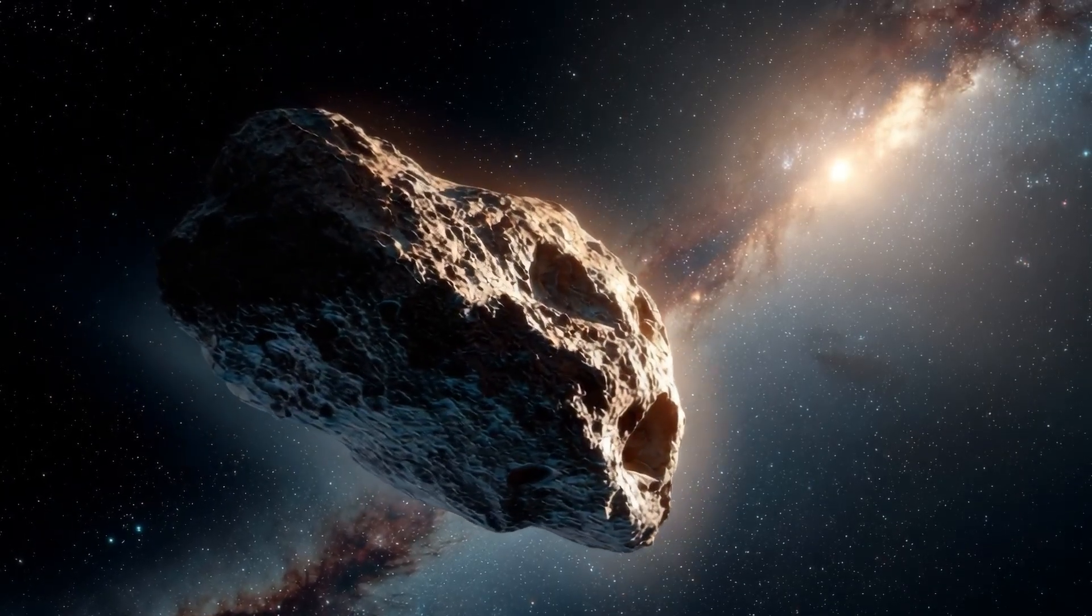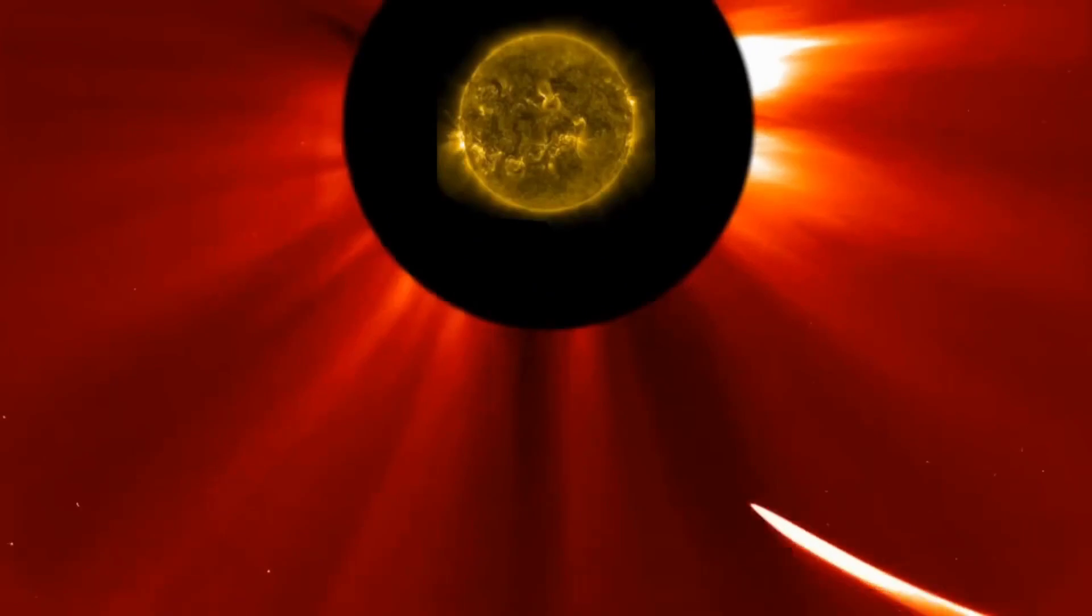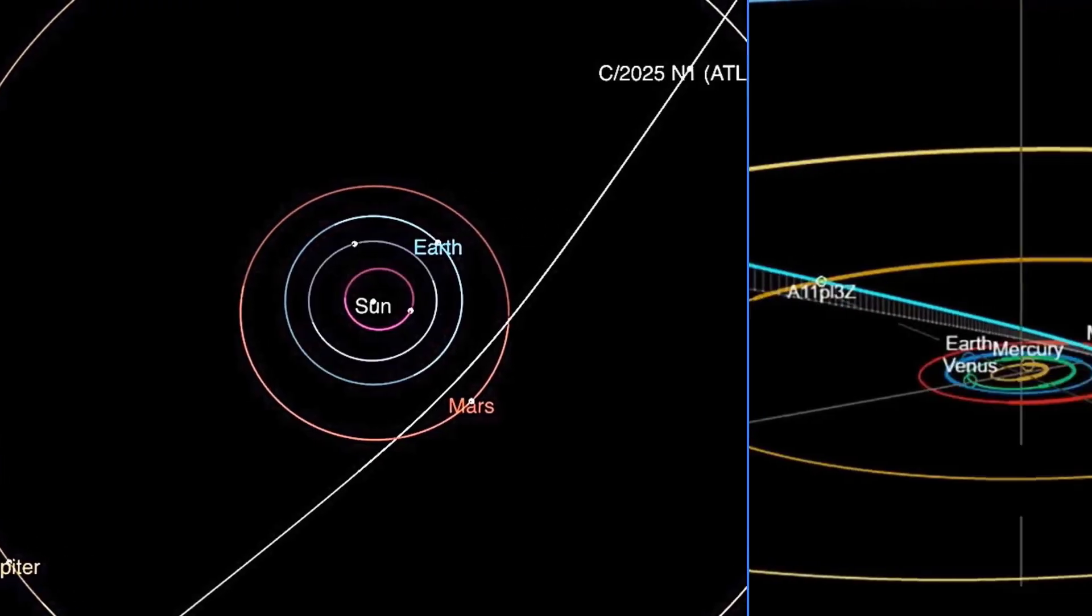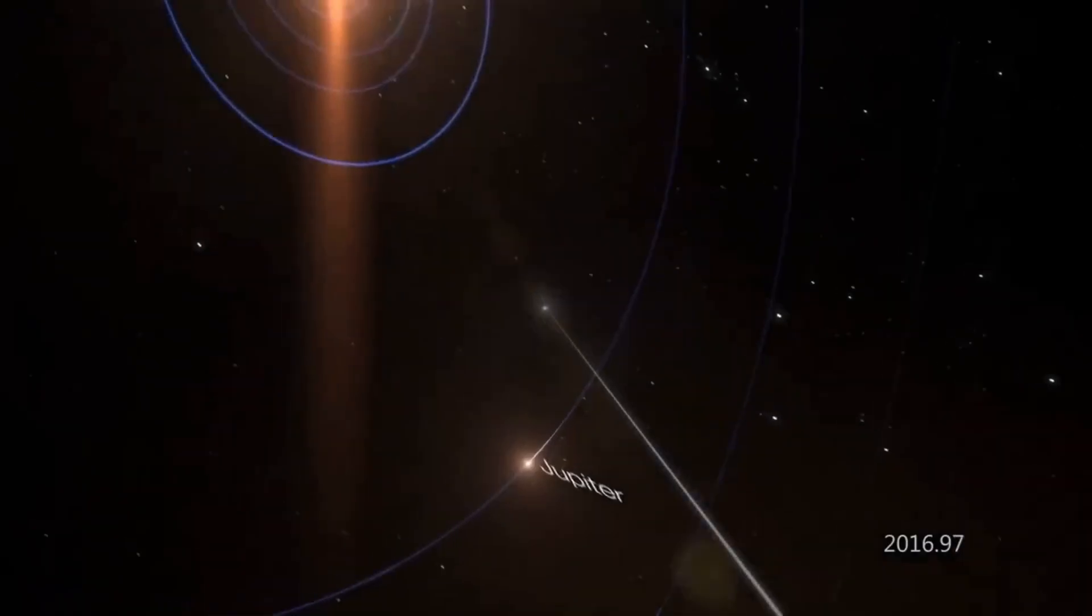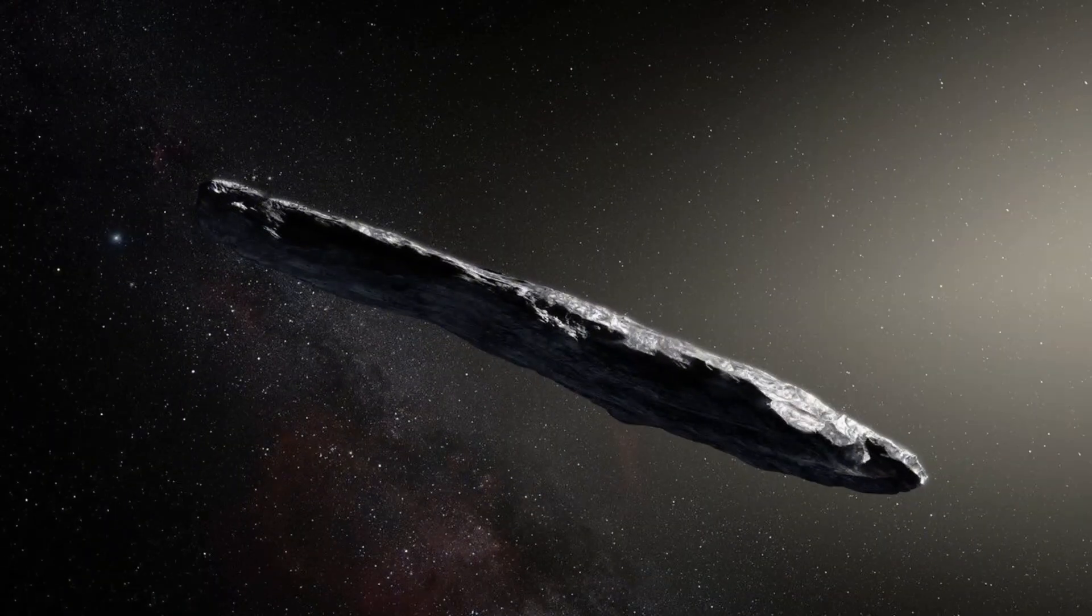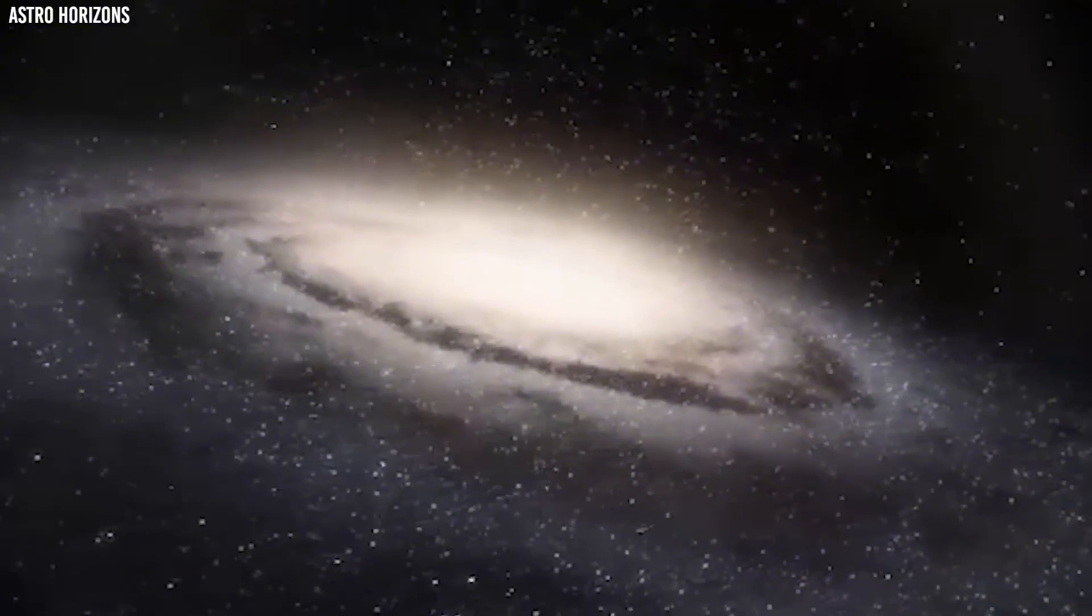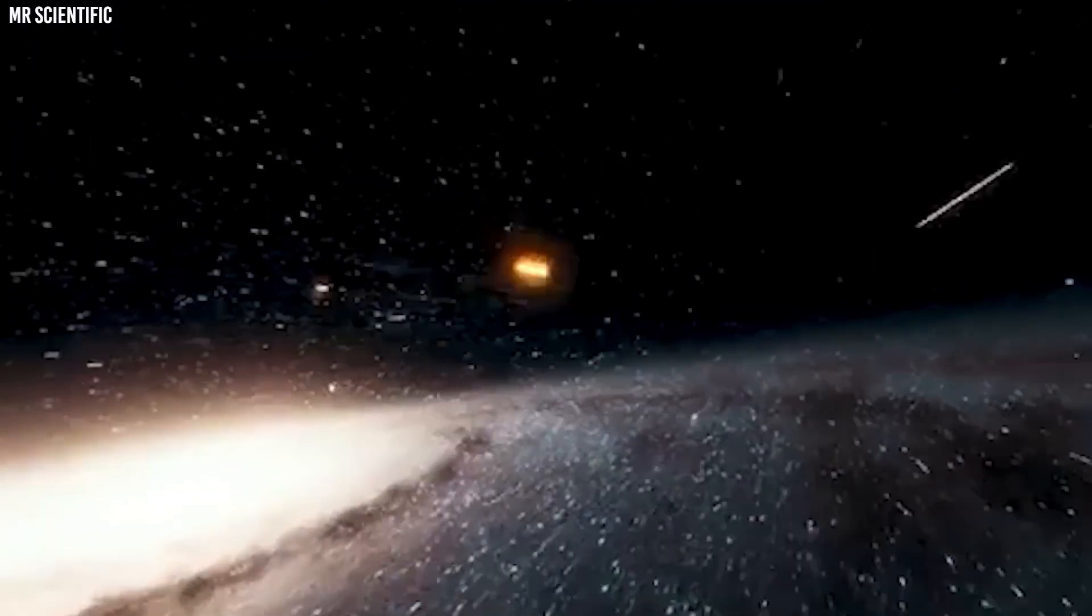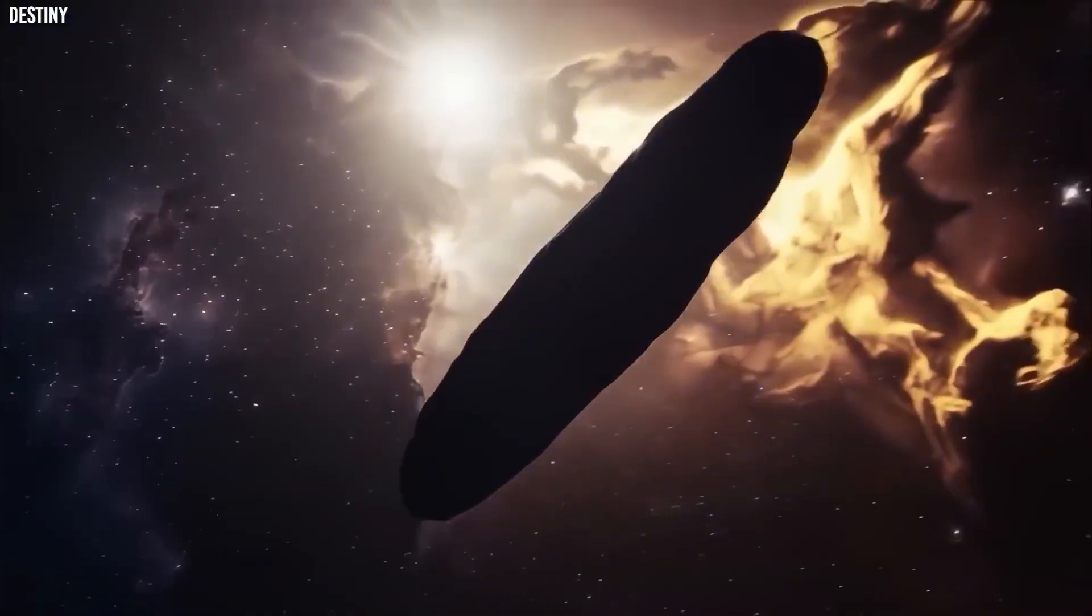The orbital path adds more intrigue. 3I Atlas approaches at about 5 degrees off the ecliptic plane, the main orbit plane of the solar system's planets. While interstellar objects can come from any direction, Oumuamua arrived at 33 degrees and Borisov at 44 degrees. This object's path threads almost directly through the planetary plane, passing near Mars in early October, Venus in November, and close to Jupiter's orbit in March 2026. This alignment is statistically rare, but not impossible. Early activity also stands out. When discovered on July 1st, 3I Atlas was already outgassing at 4.5 astronomical units from the Sun beyond Jupiter's orbit. Most comets remain inactive until about 3 AU.